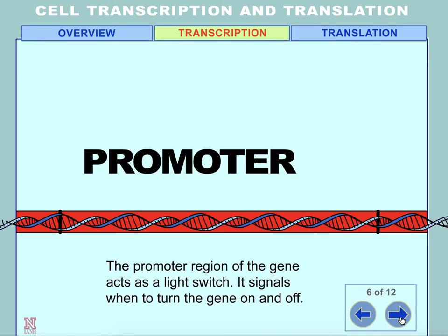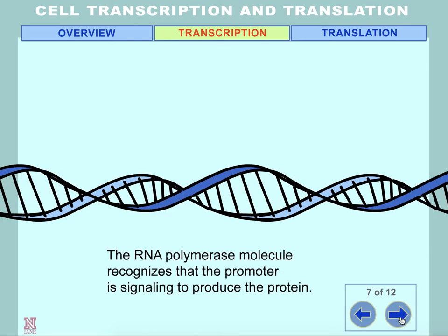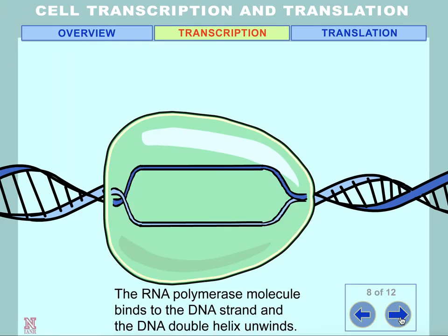The promoter region of the gene acts as a light switch — it signals when to turn the gene on and off. The RNA polymerase molecule recognizes that the promoter is signaling to produce the protein, then binds to the DNA strand, and the DNA double helix unwinds.